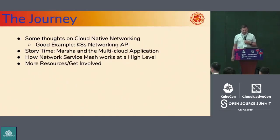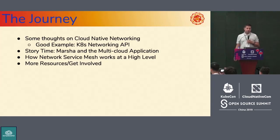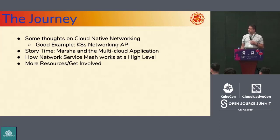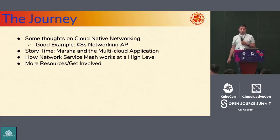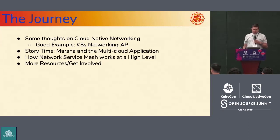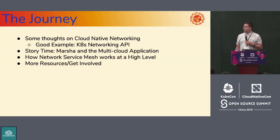Today we're going to share some thoughts about cloud native networking and look at how the Kubernetes networking API handles this as a good example. We also usually have story-type narratives — today we're going to show Marsha and her multi-cloud application problems. We'll show how Network Service Mesh works at a higher level, and of course, links and Q&A at the end.